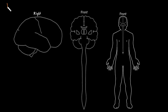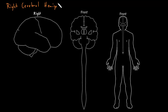In this video, I want to talk about syndromes we can see with dysfunction of the right cerebral hemisphere — right cerebral hemisphere syndromes — which in most ways is basically a mirror image of the left cerebral hemisphere syndromes, with a couple of important differences.